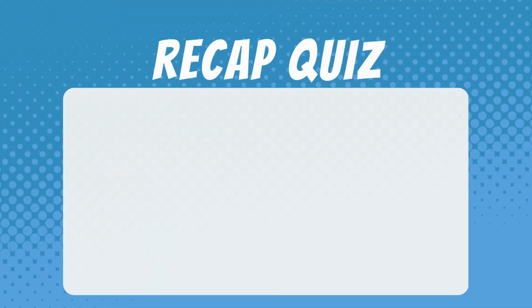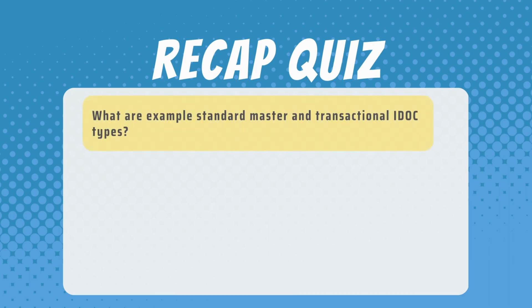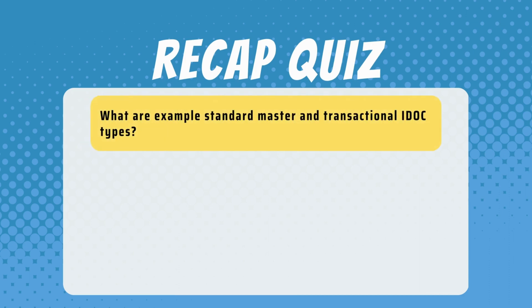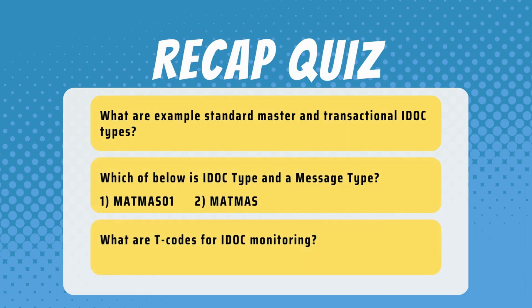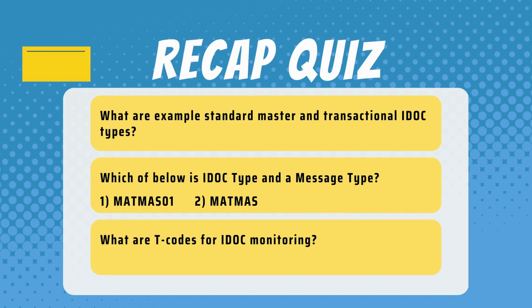Let's have a quick recap quiz. Can you provide an example of a standard IDOC type for master data and transaction data? Which of the below is an IDOC type and message type? What are the T-codes for IDOC monitoring? Let me know your feedback and answers in the comment section. Thank you for watching.